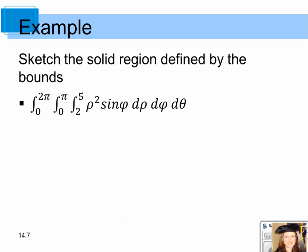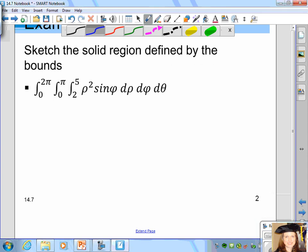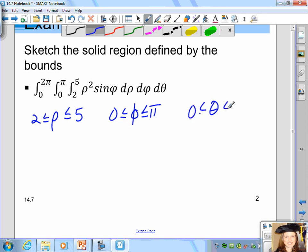For this example, we want to sketch the solid region defined by the following bounds: rho squared sine phi d rho d phi d theta, where rho goes from 2 to 5, phi goes from 0 to π, and theta goes from 0 to 2π. You can pause the video now, sketch the solid region, and then come back and check your work. The inside differential is d rho — it looks like the letter p, but that's the Greek letter rho — and these bounds define the solid region. This triple integral gives you the volume of that solid region.